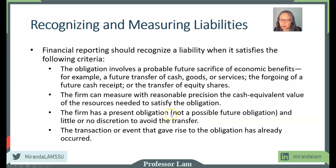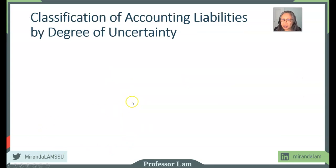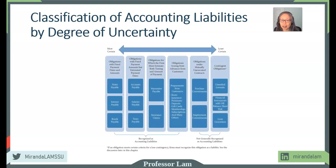We can classify liabilities by the degree of uncertainty. Some obligations are very specific — for example, a firm has a present obligation with little or no discretion to avoid the transfer, making the value very easy to identify. Others can be a lot more ambiguous. The most certain obligations have fixed payment dates and amounts, such as formal loans — notes to a bank or public bonds — with very clearly defined obligations.